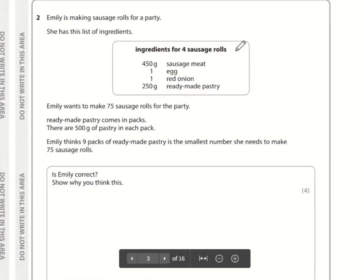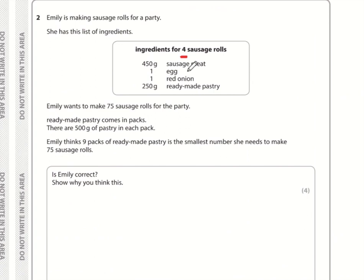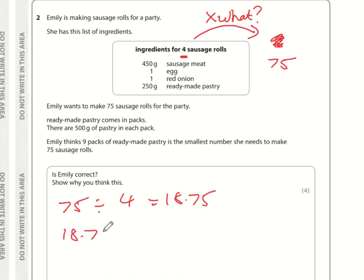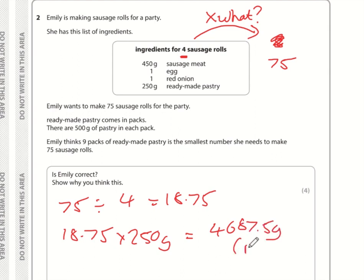Question two: this recipe is for 4 sausage rolls, but we need 75. How many times greater than 4 is 75? That's 75 divided by 4, which is 18.75. So we need 18.75 times everything on the recipe. For the pastry: 18.75 times 250 grams equals 4,687.5 grams.